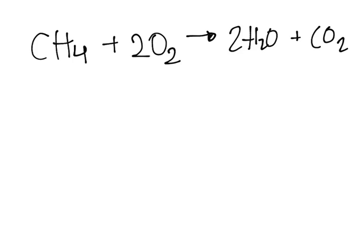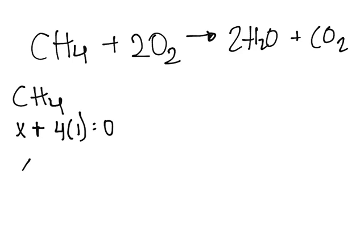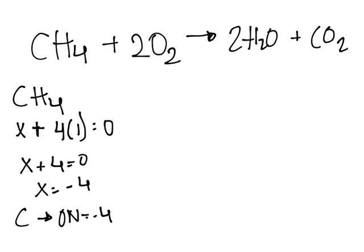The first thing you want to do is find the oxidation number of each atom in the compounds. For CH4, we don't know the oxidation number of carbon, so we put it as X. Hydrogen bonded to a non-metal like carbon has an oxidation number of plus 1, and we have four hydrogens, so that's 4 times 1. There's no charge, so X plus 4 equals 0, giving us carbon with an oxidation number of minus 4 as a reactant.